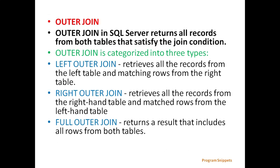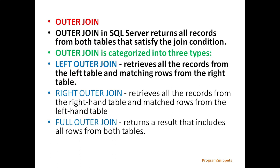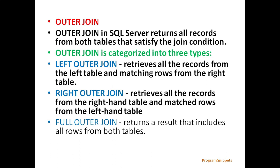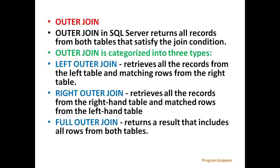Outer JOIN in SQL Server returns all records from both tables that satisfy the JOIN condition. Outer JOIN is categorized into three types: Left Outer JOIN, which retrieves all records from the left table and matching rows from the right table; Right Outer JOIN, which retrieves all records from the right table and matched rows from the left table; and Full Outer JOIN, which returns a result that includes all rows from both tables.